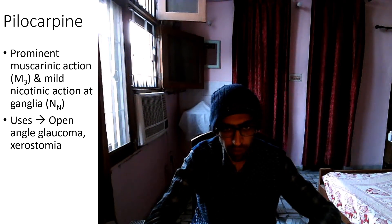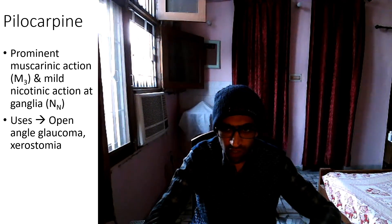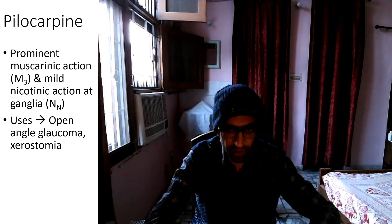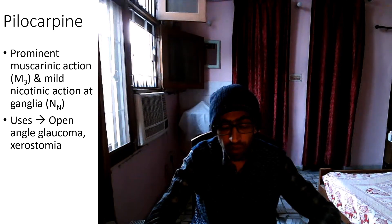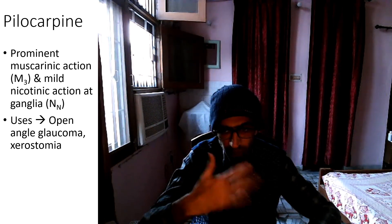Pilocarpine acts via M3 receptors to increase salivary secretions. Its side effects include an initial stinging sensation in the eye and painful spasm of accommodation. Salivary secretions are also increased as a side effect.